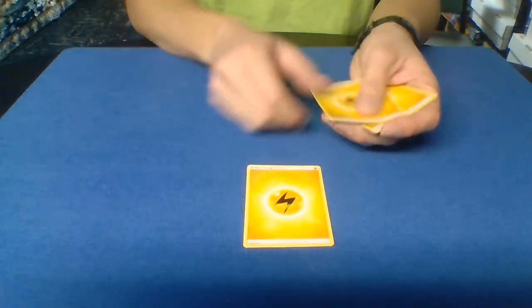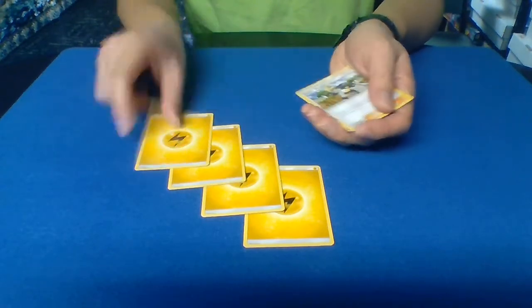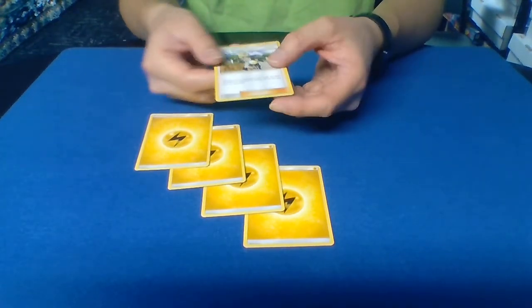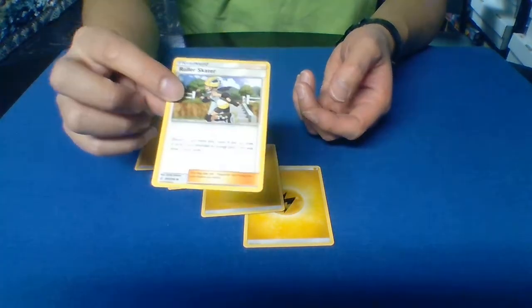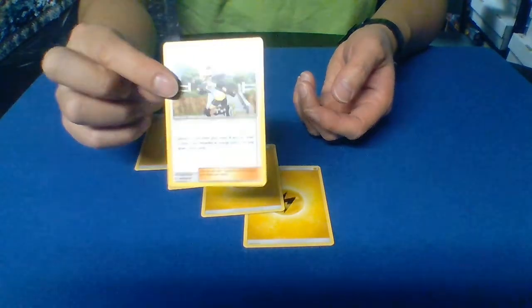So this trick is going to use four energy cards - one, two, three, four - and then some other card. In this case, today it's going to be the Roller Skater Trainer Supporter.